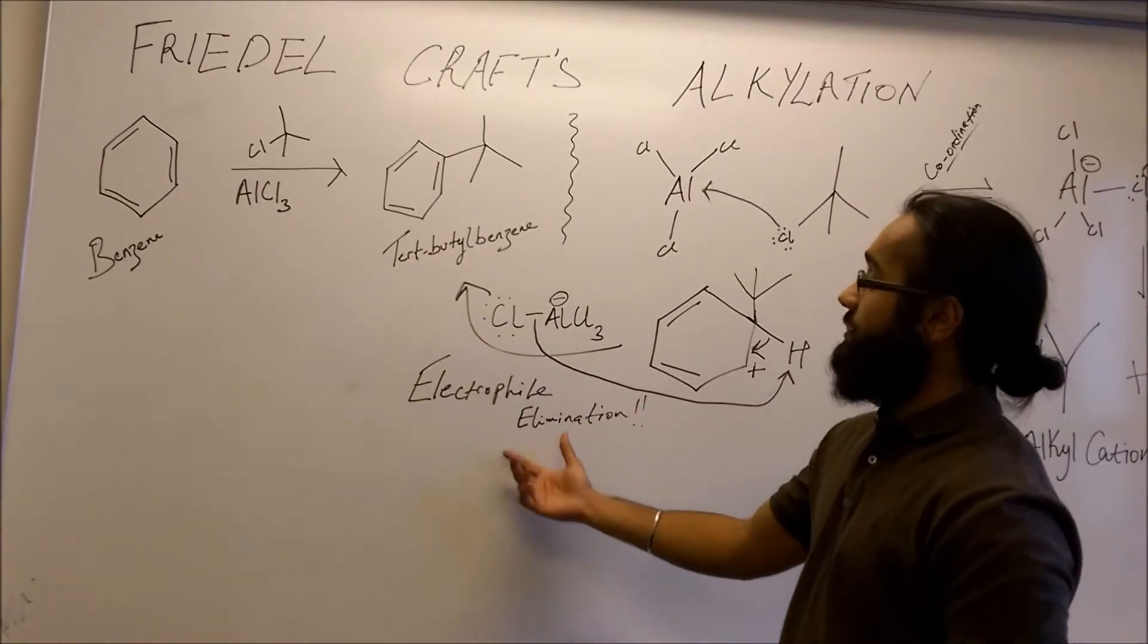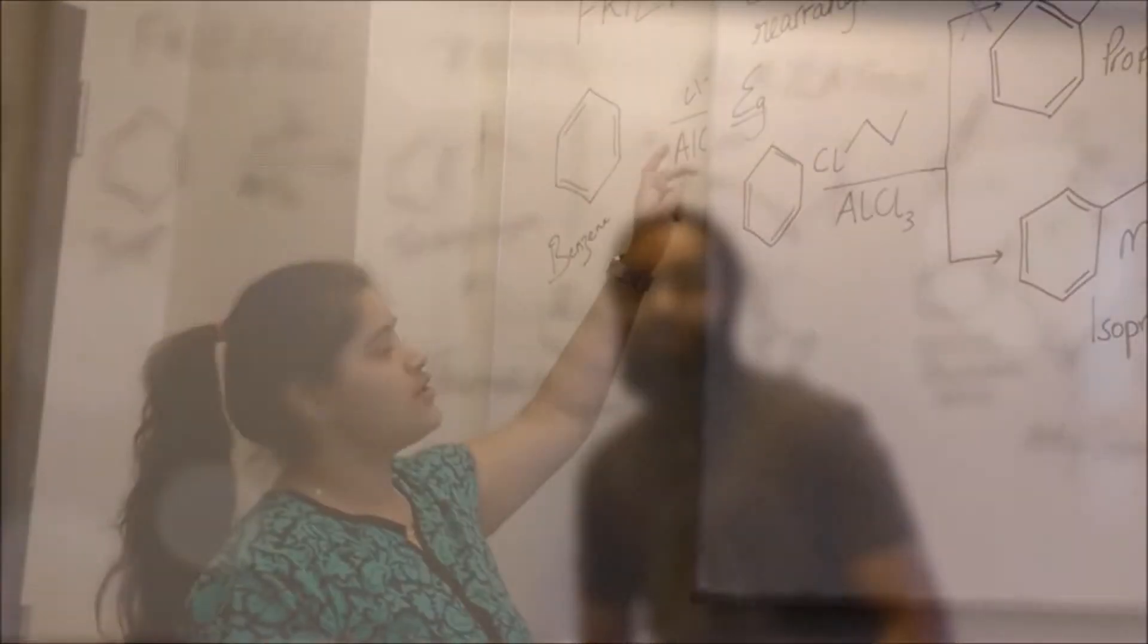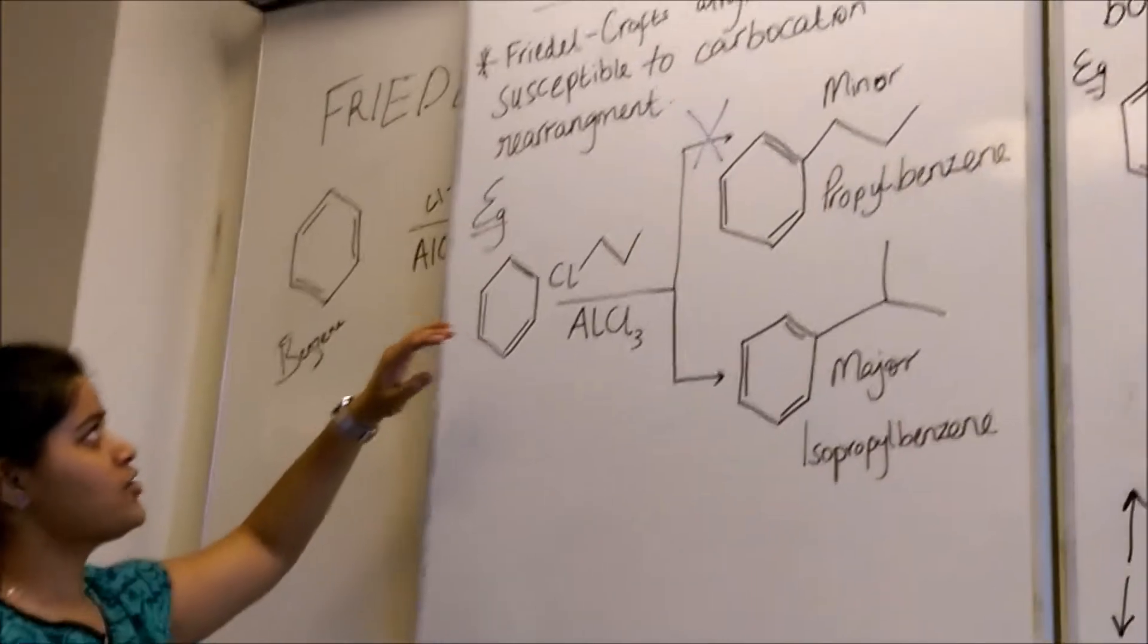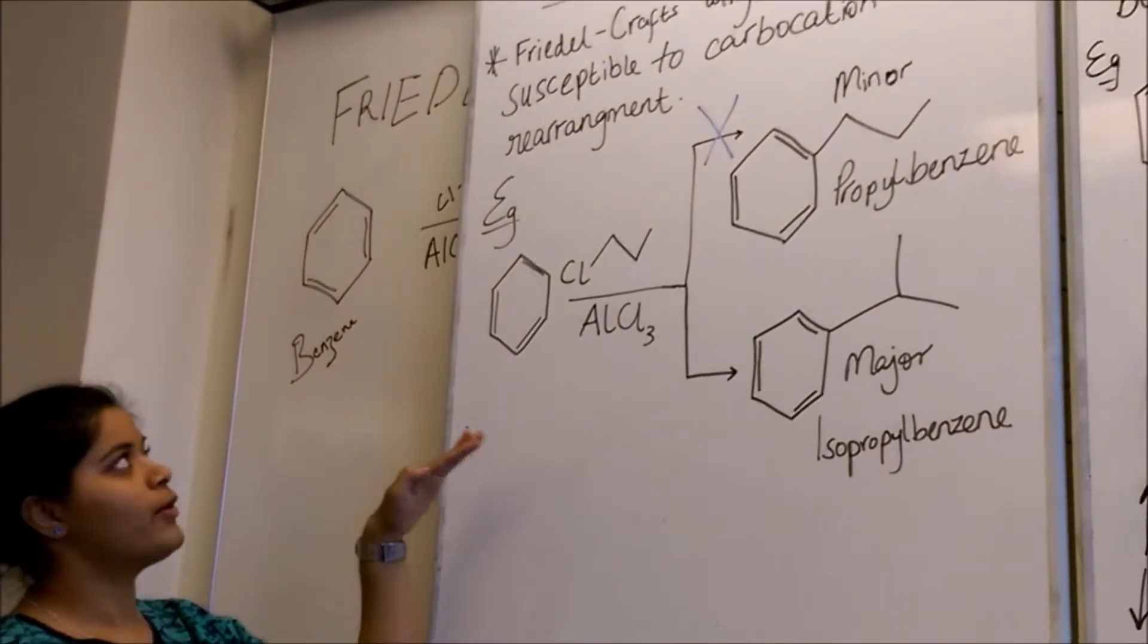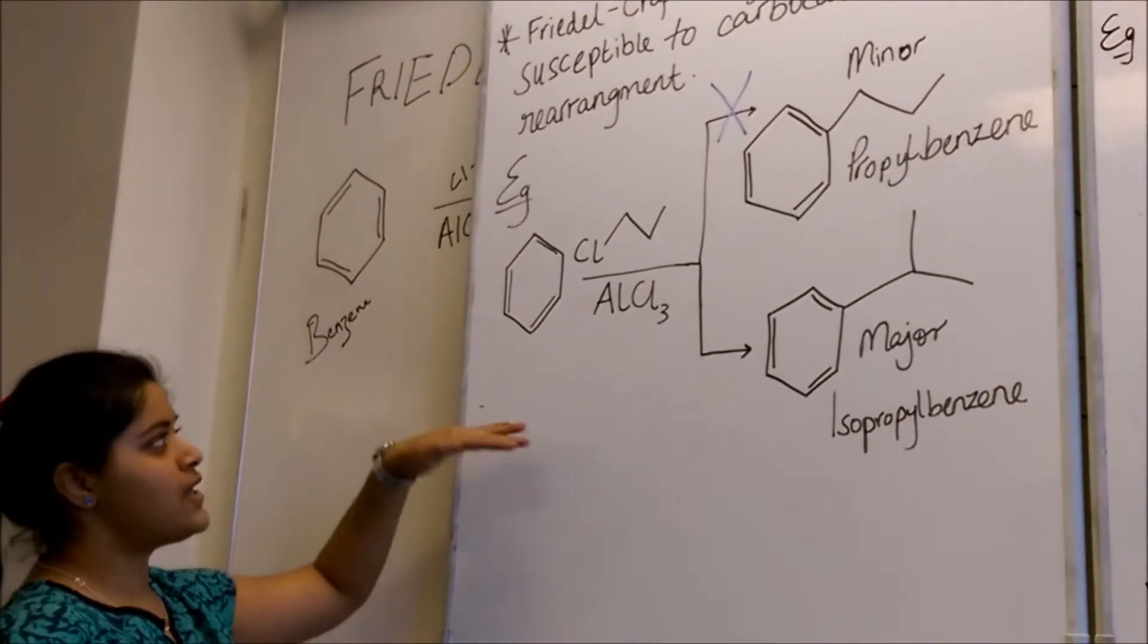And the final step of electrophilic elimination is going to make our tert-butyl benzene. Two limitations to the Friedel-Crafts Alkylation reaction. The first one is they're susceptible to carbocation rearrangement. For example,